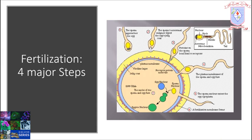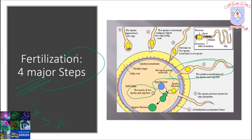The process of fertilization involves four major steps. The first step is the sperm and egg making contact with each other of the same species and recognizing that both are of the same species. The second step is one sperm entering the egg. The third step is fusion of the genetic material of sperm and egg. The fourth step is the activation of the egg to begin development. These processes are conserved in invertebrates as well as vertebrates.